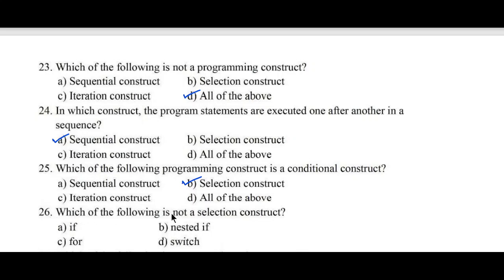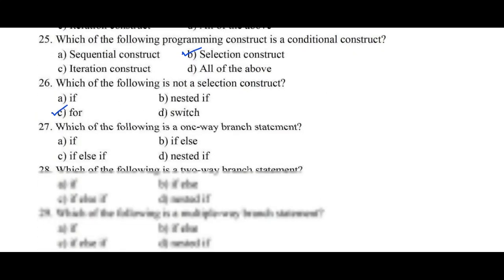Question number 26: Which of the following is not a selection construct? Option A. If, B. Nested if, C. For, D. Switch. Here option C, For, is an iterative construct, hence it is not a selection construct. If, nested if, and switch are all selection statements. Hence C is the right answer.